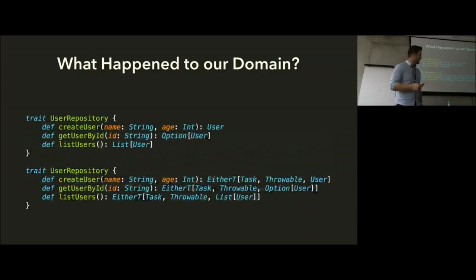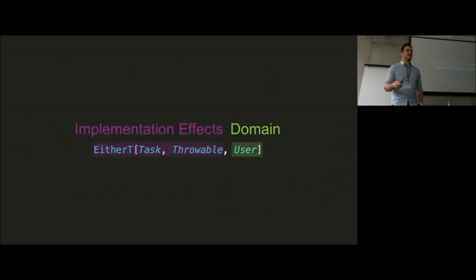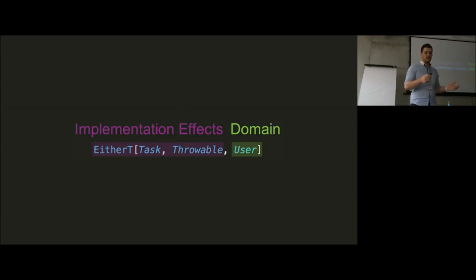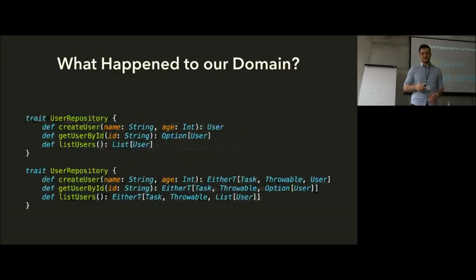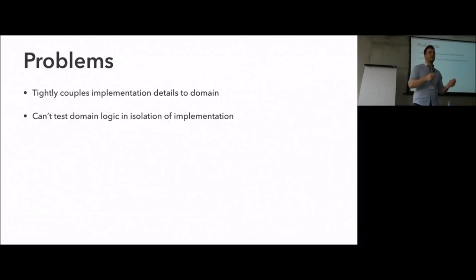If we look at where we started and where we ended up — our actual domain versus what our domain looks like in production code — we can see there is a mismatch. It looks like something has been tightly coupled. It turns out that what that is is the implementation effects. We've said we want some kind of asynchronous error handling on top of our domain, and that's become part of all of our domain signatures and all of our implementation details.